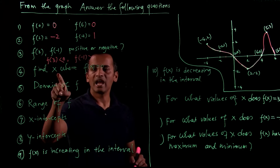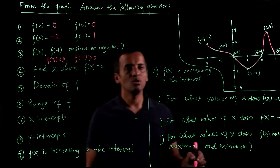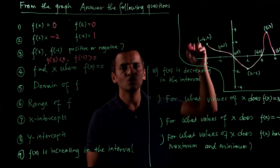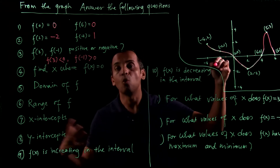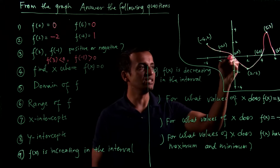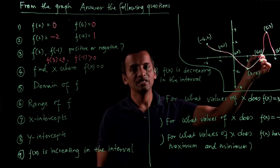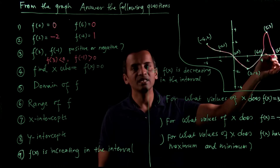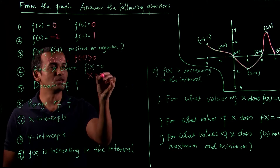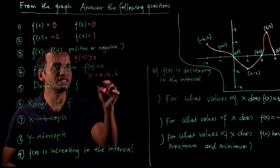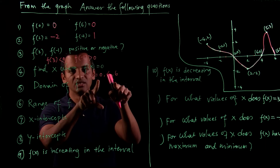Number 4 is: find x where f(x) = 0. In how many points does the function cross the x-axis? Those are the points where f(x) = 0, or y = 0. At x = 0, y is 0. At x = 4, y is 0. At x = 6, y is 0. So x equals 0, 4, and 6 are the values where f(x) = 0.